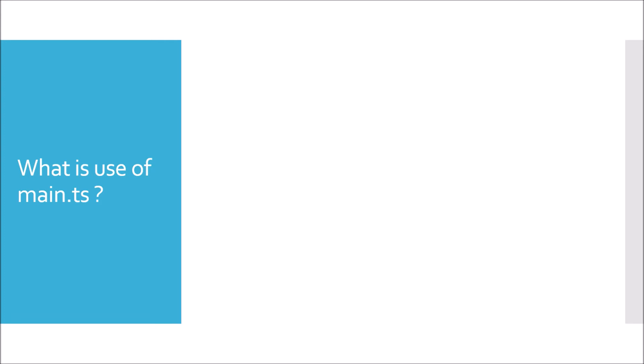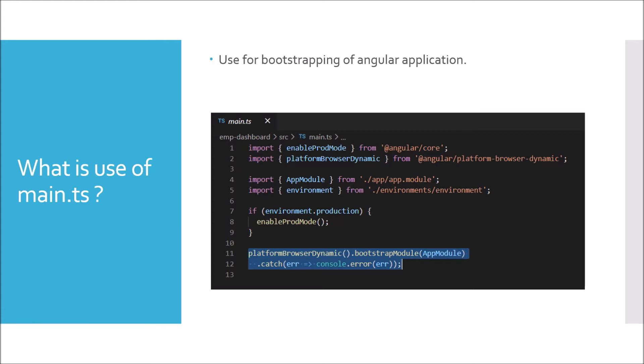Next question: what is the use of main.ts? In Angular, main.ts is used for bootstrapping the Angular application, similar to how we bootstrap the main application in Spring Boot. If you look at the content of main.ts in the highlighted section, you will find that inside platform-browser-dynamic's bootstrapModule, we pass the root module — AppModule — making the application compatible with the browser environment.